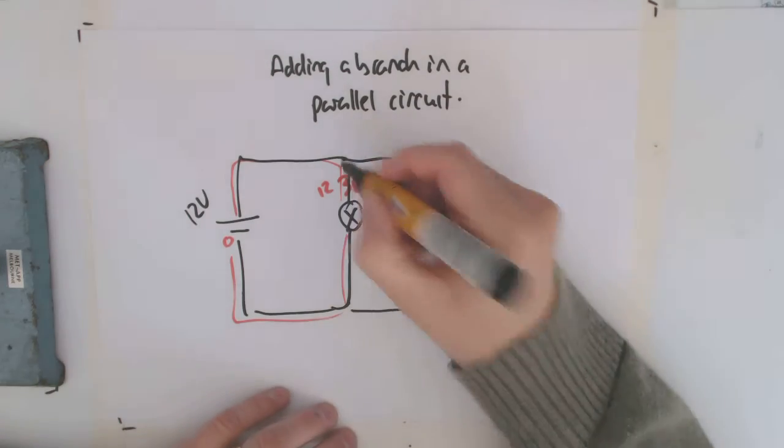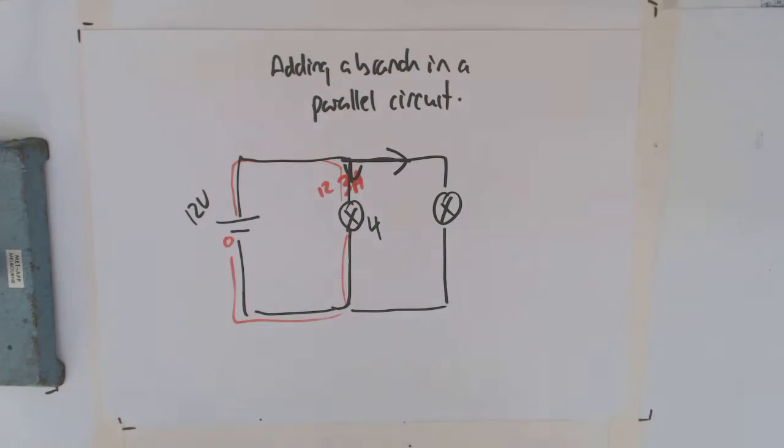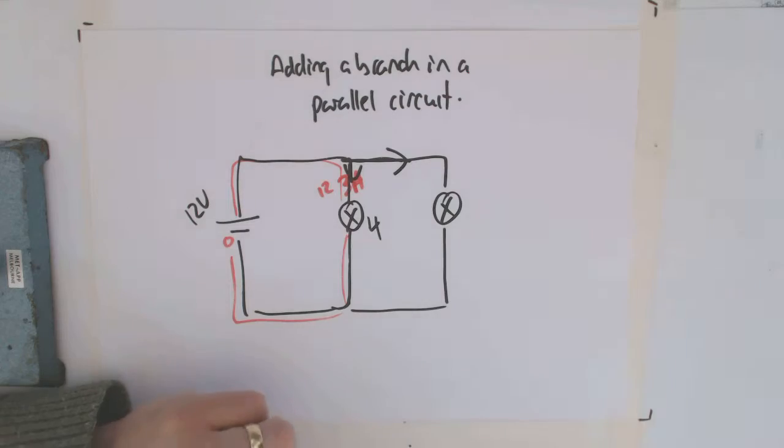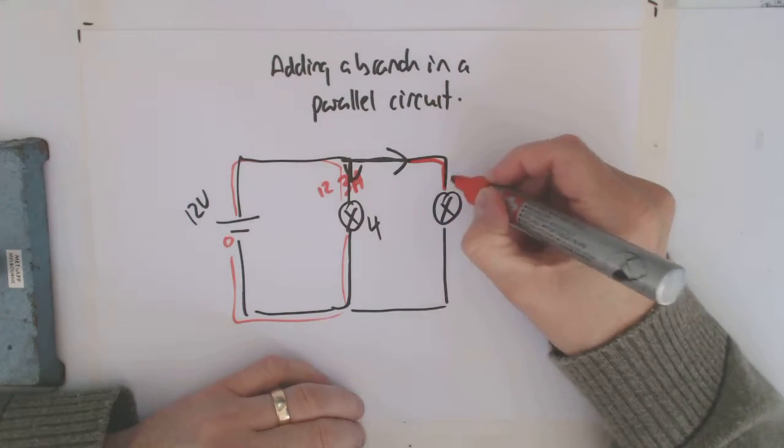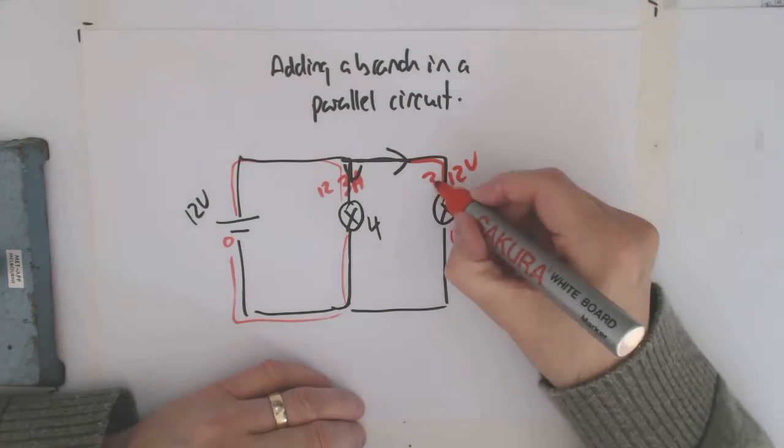Well, it does. The current does split at this junction. It goes that way and that way. You're quite right. But it's not like your original 3 amps gets split. What happens is you've still got 12 volts over here and 0 volts there. So you still have 3 amps.